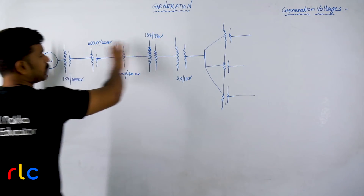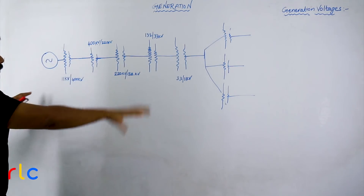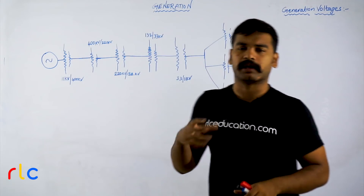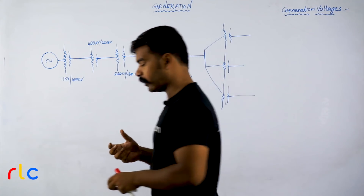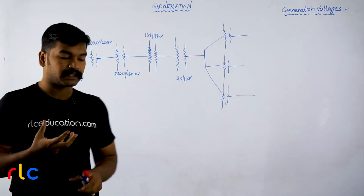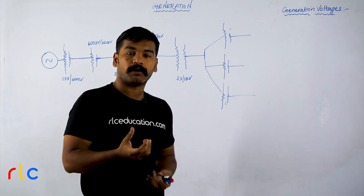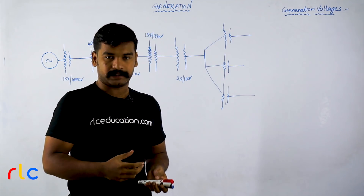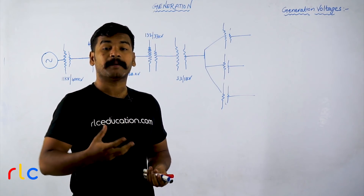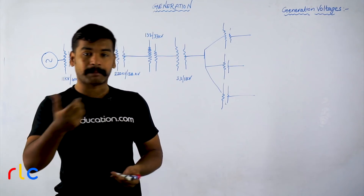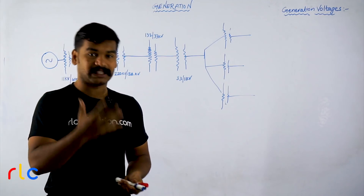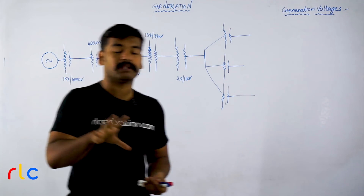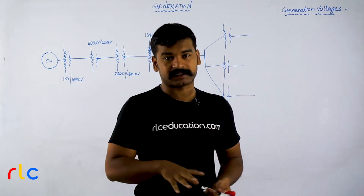On the board you are seeing a single line diagram, which is basically a structure of a power system. Before getting into the structure, let me give a brief definition: a power system is a sequential arrangement of components to generate power, transmit the power, distribute the power, utilize the power, and protect it at every point of time.